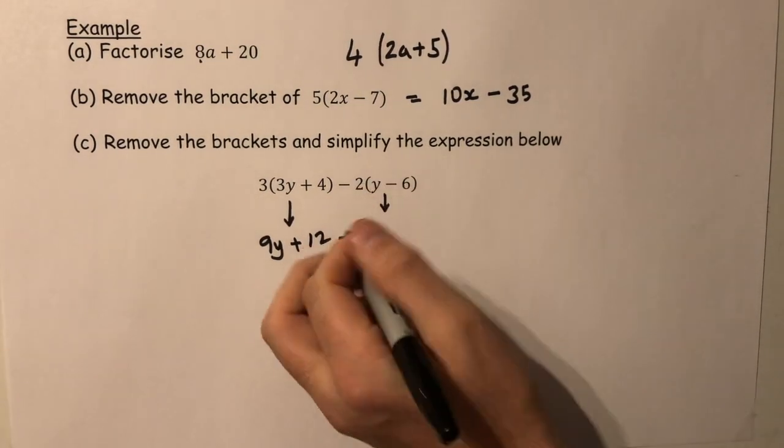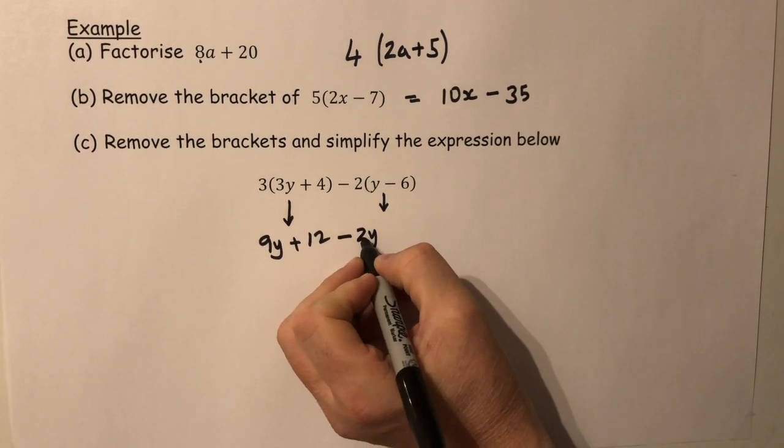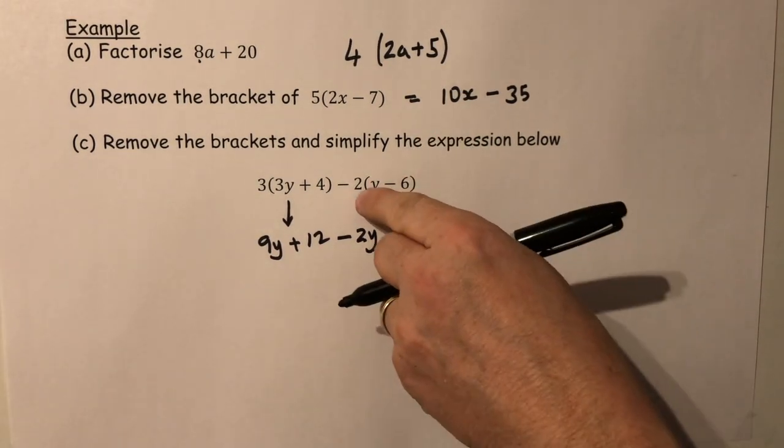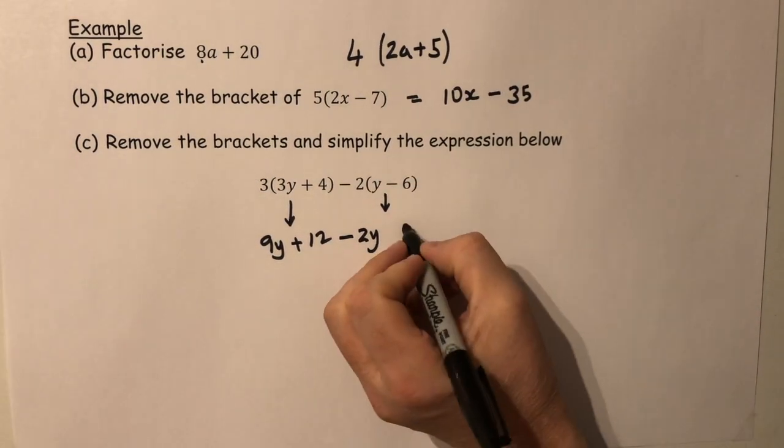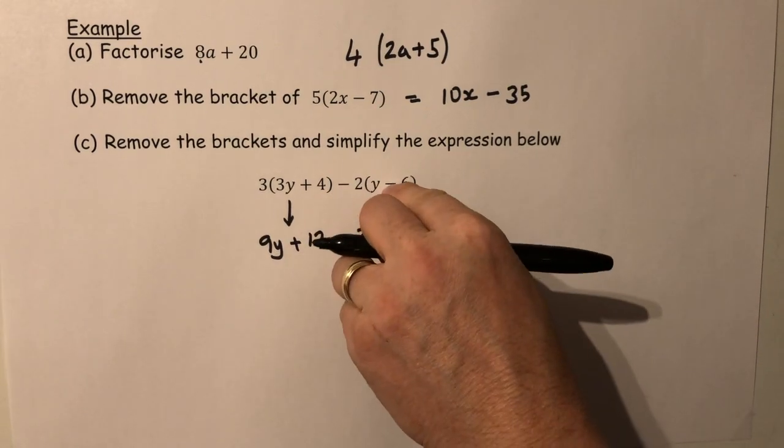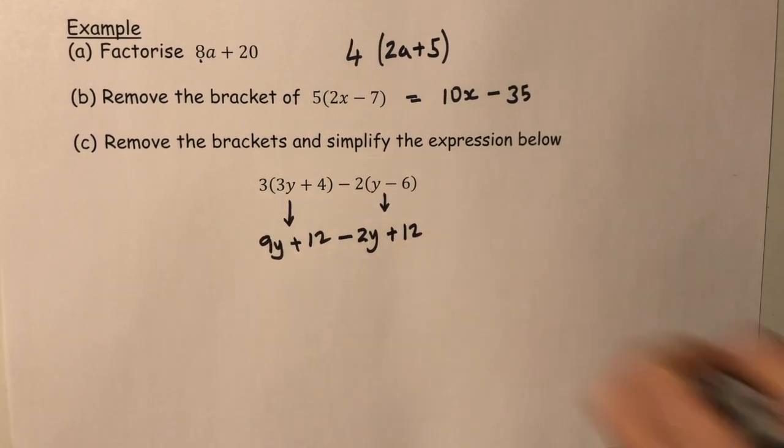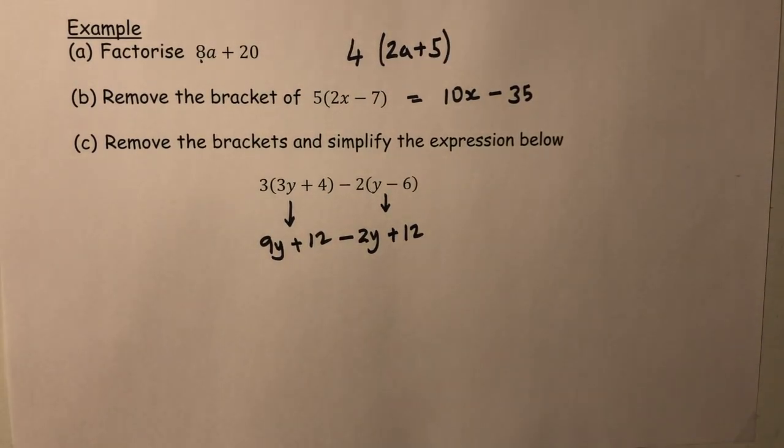Minus two times y is minus 2y, but this is where problems exist. Two times six is twelve, but we have a minus times a minus, so that should be a plus twelve.